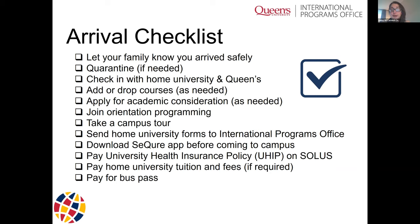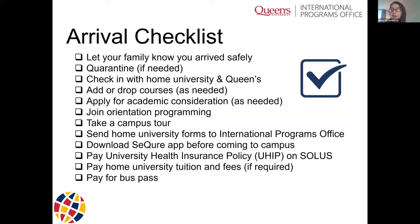Check in with your home university and Queen's when you arrive. Add or drop courses as needed. Apply for academic consideration as needed — I'll talk about this in a couple of slides. Join some orientation programming and take a campus tour. You can send your home university paperwork to our team via email. Download the Secure app — note the Q in Secure — before you come onto campus. Regarding finances: you need to pay the university health insurance plan on Solus, usually around $200 Canadian per term, typically due by end of September — the International Center administers that plan.